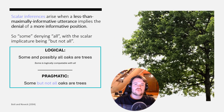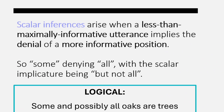Bott and Novak did some really interesting research on this topic in 2004, studying the phenomenon in linguistics. They provided a nice, coherent, and short but informative definition for what scalar inferences actually are. They said that scalar inferences arise when a less than maximally informative utterance implies the denial of a more informative position. This sounds very strange, but an example will make it clearer. The word 'some' is a less than maximally informative utterance. The maximally informative utterance on that scale is actually the word 'all.'